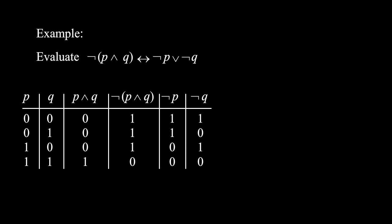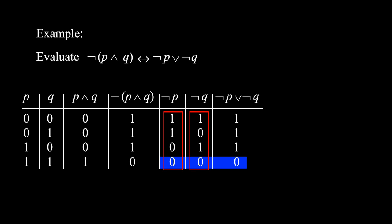In the seventh column, we put not p or not q. This is the OR of the fifth and sixth columns. It has only 0 if both the fifth and sixth columns are 0s, otherwise 1s.